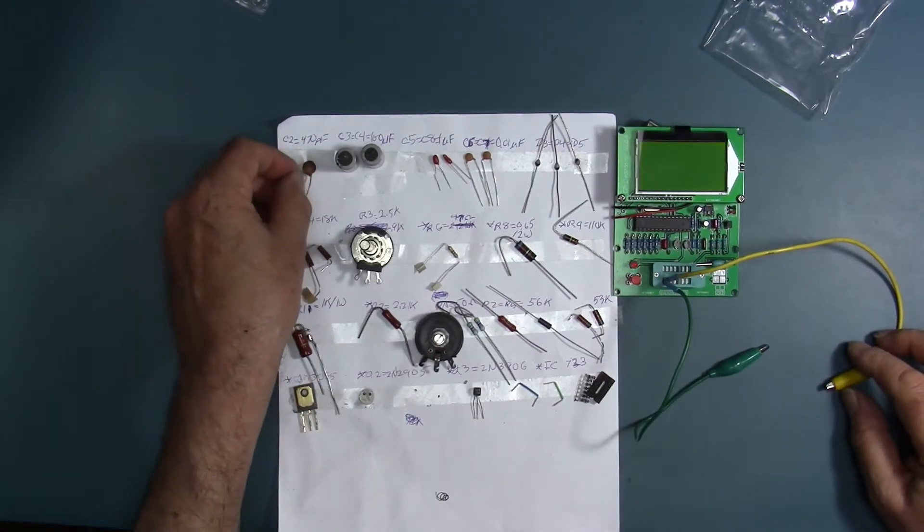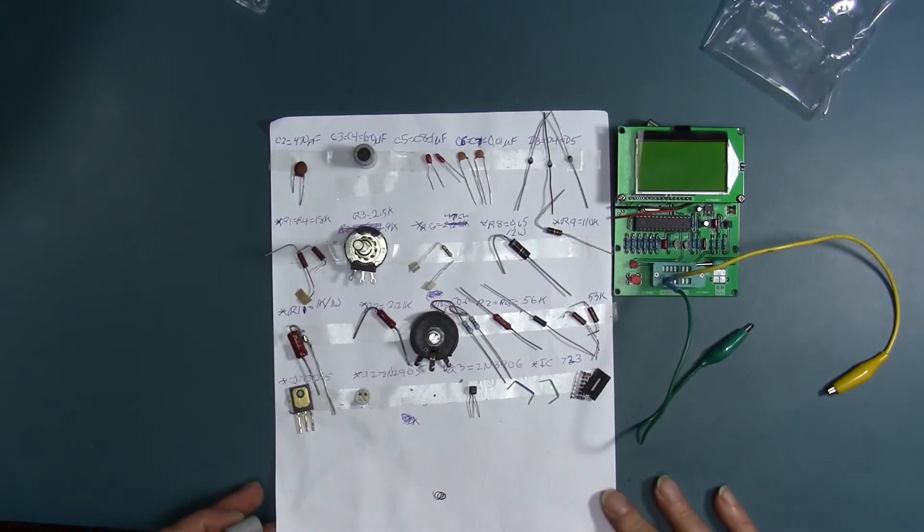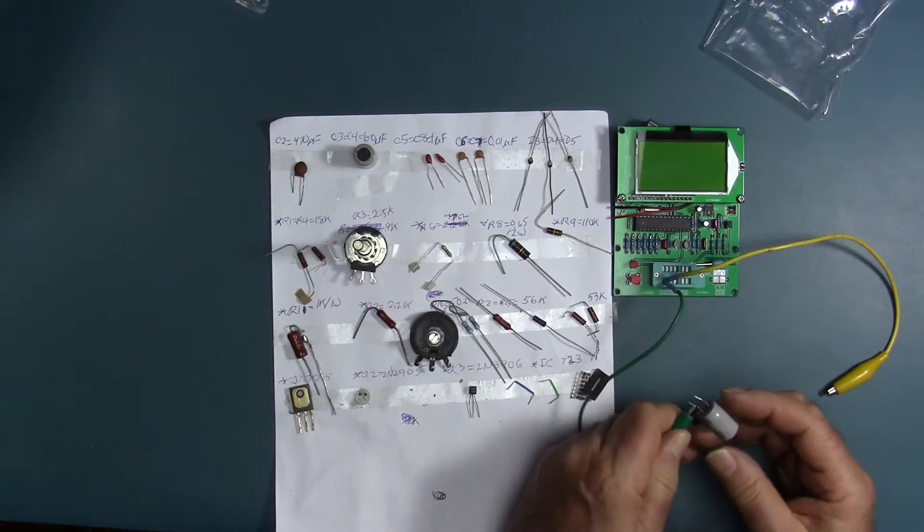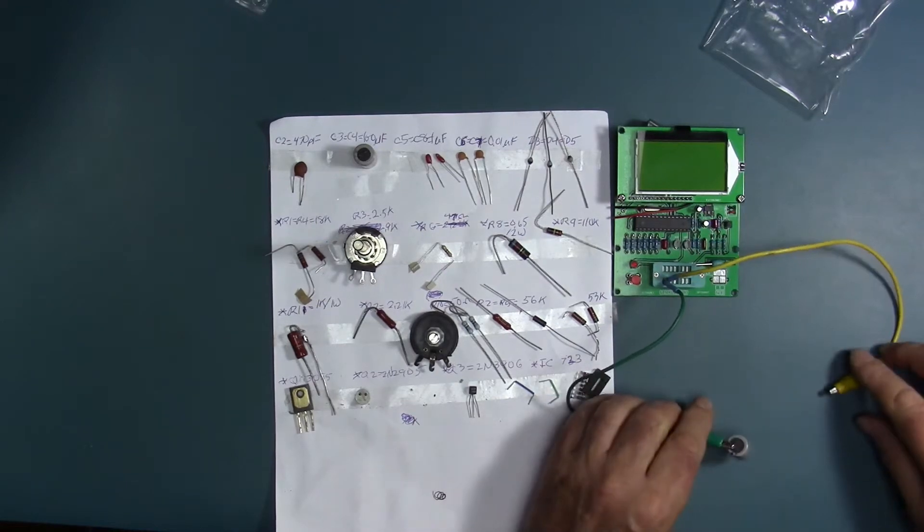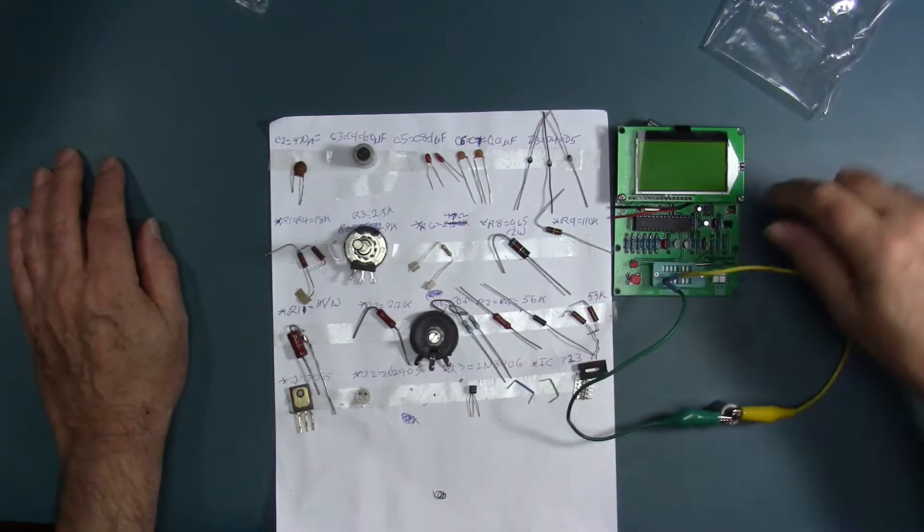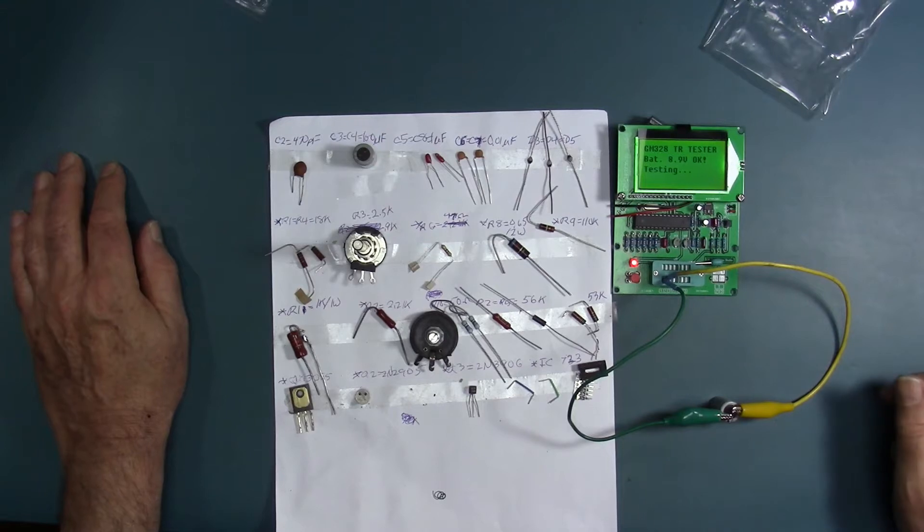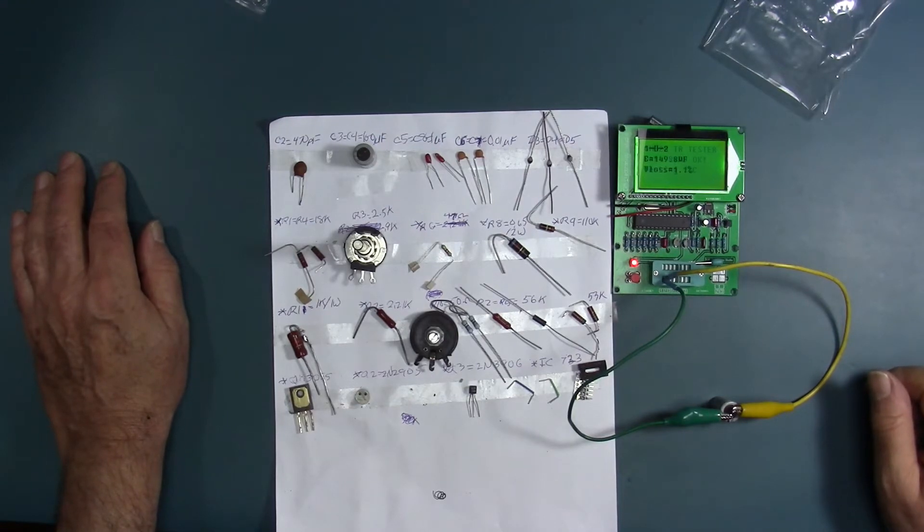Now, testing capacitors. Electrolytic capacitors - I want to try to keep the polarity correct. The left number one connection is negative. This comes up with the fact that it's a capacitor connected to the one and two clips and gives you the voltage loss and the equivalent series resistance of the capacitor.